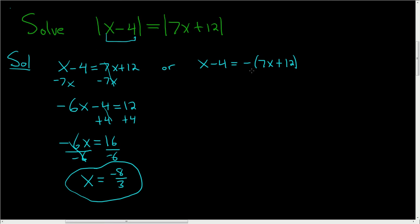Over here, same thing. Let's go ahead and distribute the negative 1 here. So x minus 4 is equal to negative 7x minus 12. This time we'll add the 7x to both sides, so plus 7x plus 7x. These cancel, so we get 8x minus 4 equals minus 12.